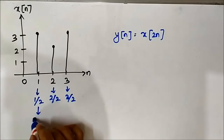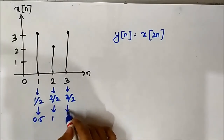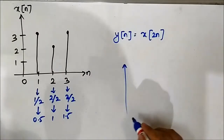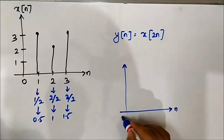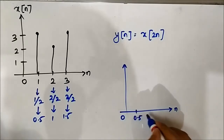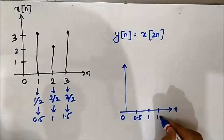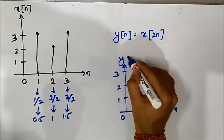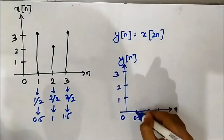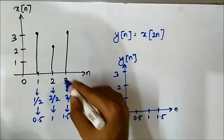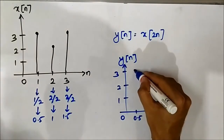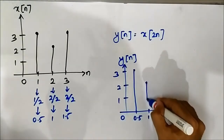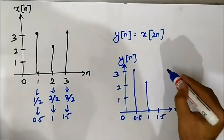So 1/2 becomes 0.5, 2/2 becomes 1, and 3/2 becomes 1.5. The time-scaled discrete time signal will have time instances 0, 0.5, 1, 1.5 with no change in amplitude. For y[n]: at n=1 the amplitude was 3, so at n=0.5 it will be 3. At n=2 it was 2, so at n=1 it will be 2. At n=3 it was 3, so at n=1.5 it will be 3 again.